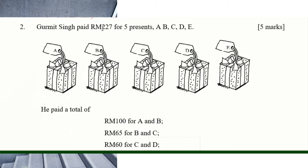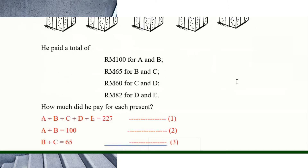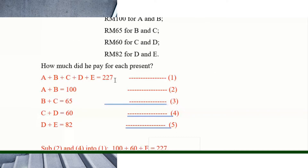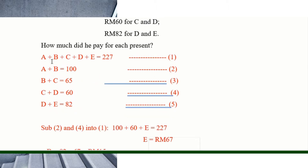Number two: he paid $227 for five presents, meaning a plus b plus c plus d plus e altogether is 227. Write down the first piece of information: a plus b plus c plus d plus e equals 227. Then the second: a plus b equals 100, b plus c equals 65.